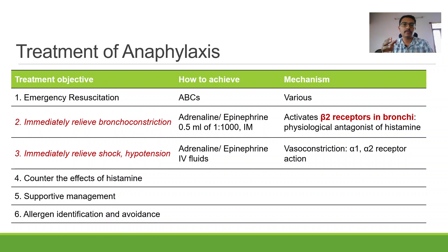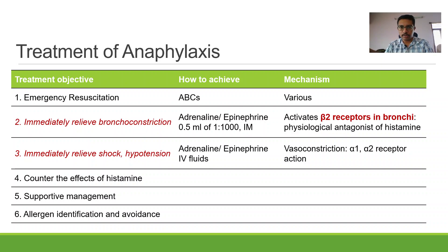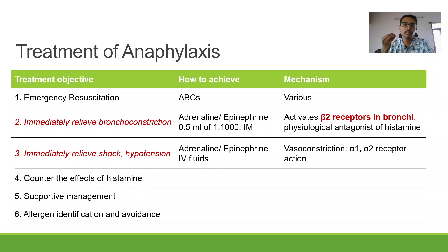Another important thing to remember is that epinephrine is the physiological antagonist of histamine. Histamine causes vasodilatation and bronchoconstriction by acting on H1 receptors, while adrenaline does the opposite — it produces bronchodilatation and vasoconstriction — but by acting on an entirely different receptor system: adrenergic receptors. Histamine causes bronchoconstriction; adrenaline causes bronchodilatation. Histamine causes vasodilatation; adrenaline causes vasoconstriction. But entirely different receptor systems, totally opposite effects. This phenomenon is called physiological antagonism, and this is something you must remember.